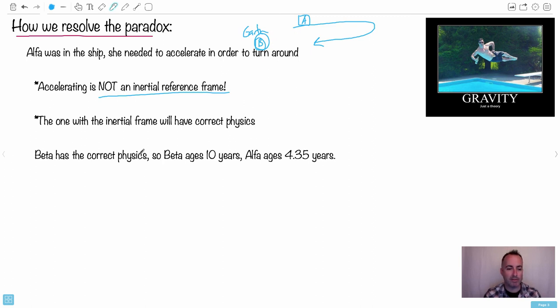In other words, Beta will have the correct physics. So it really will be that Beta who stays on Earth really will age 10 years. And Alpha really will age 4.35 years. There's no other way around it. And again, that's how we get out of the paradox. Remember, it's because Alpha had to accelerate. Therefore, she's not in an inertial reference frame. So you can't count her reference frame being still, being the one that doesn't move. You can't count that one. That one doesn't work. So that's how we get out of it.